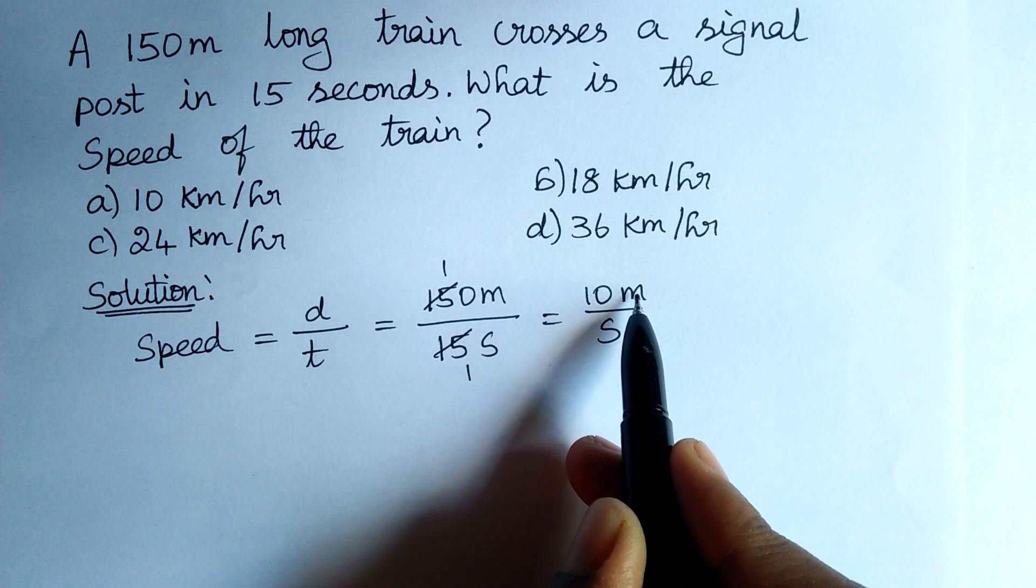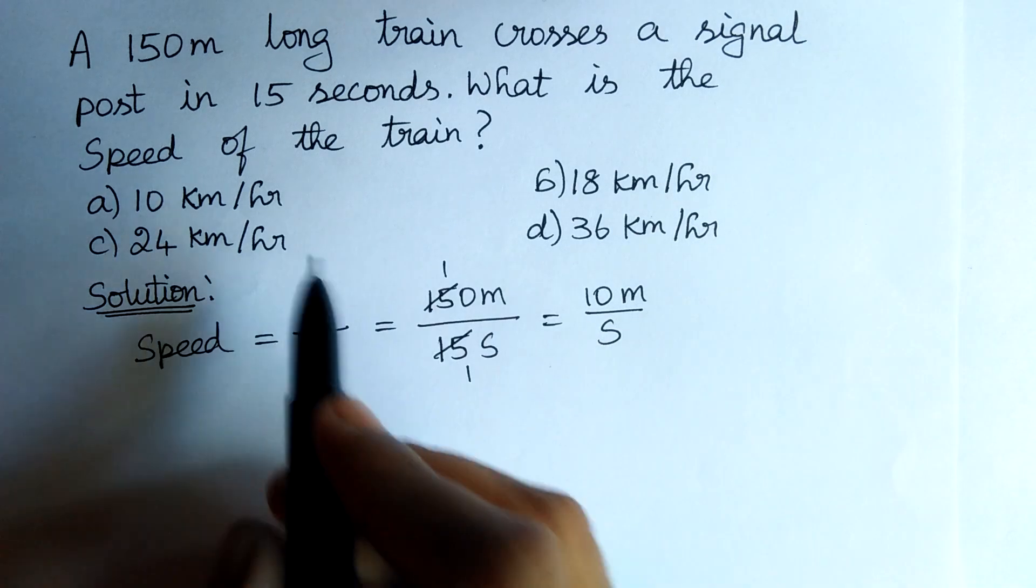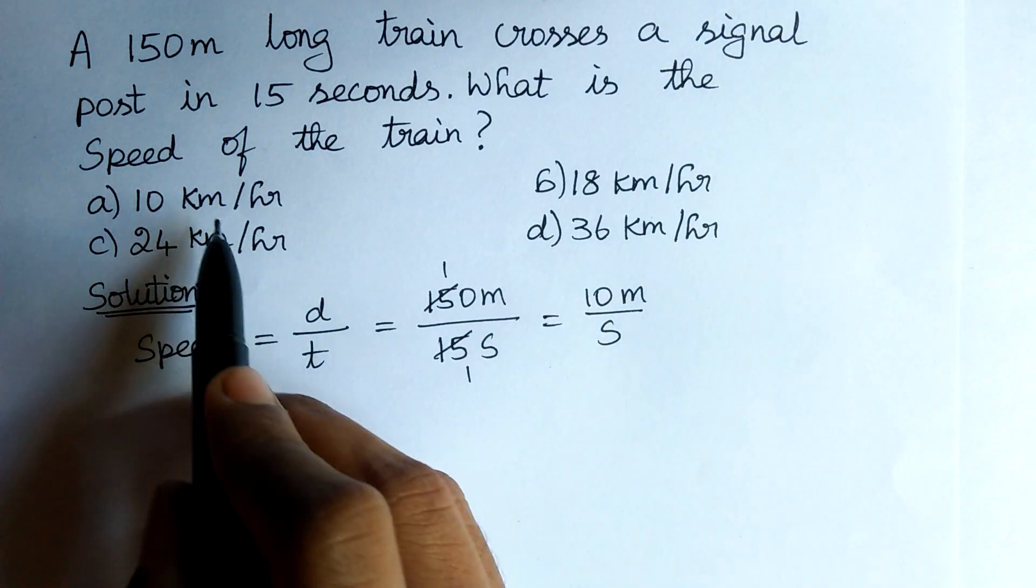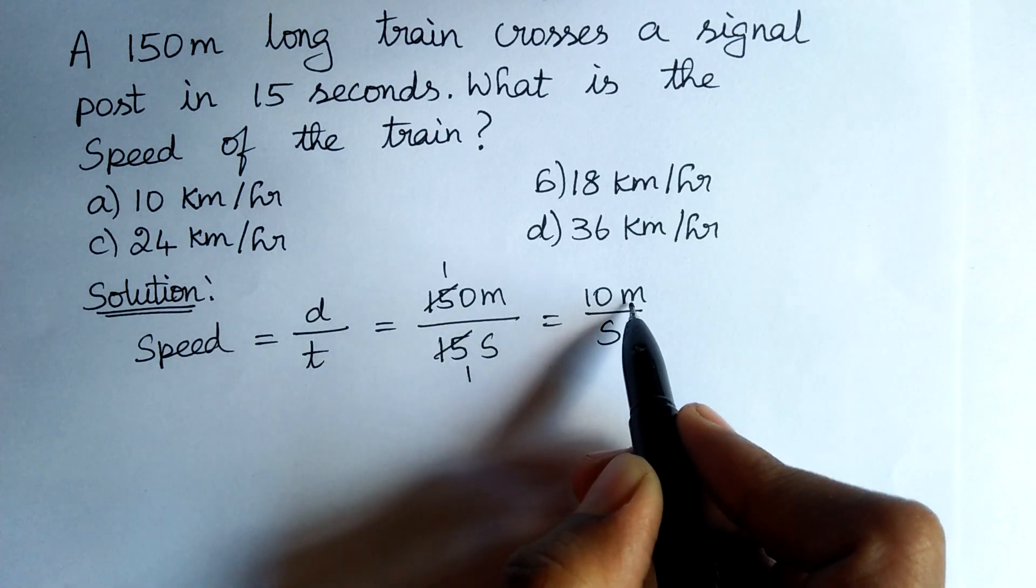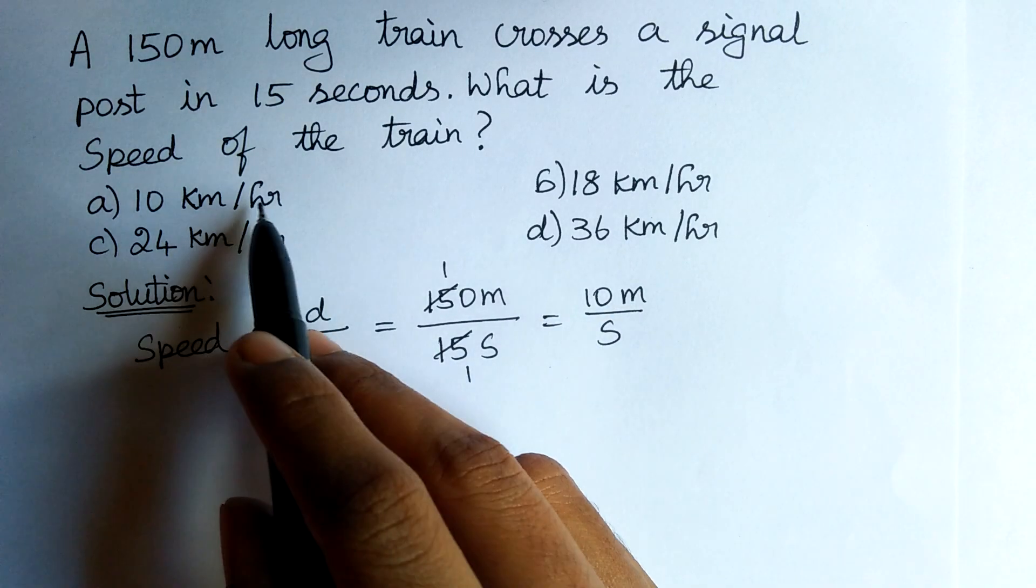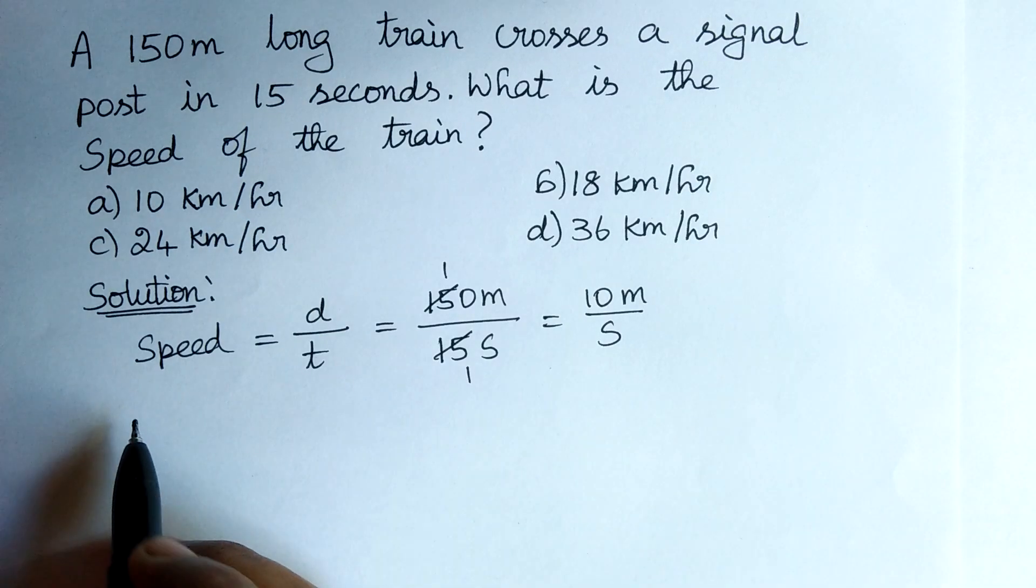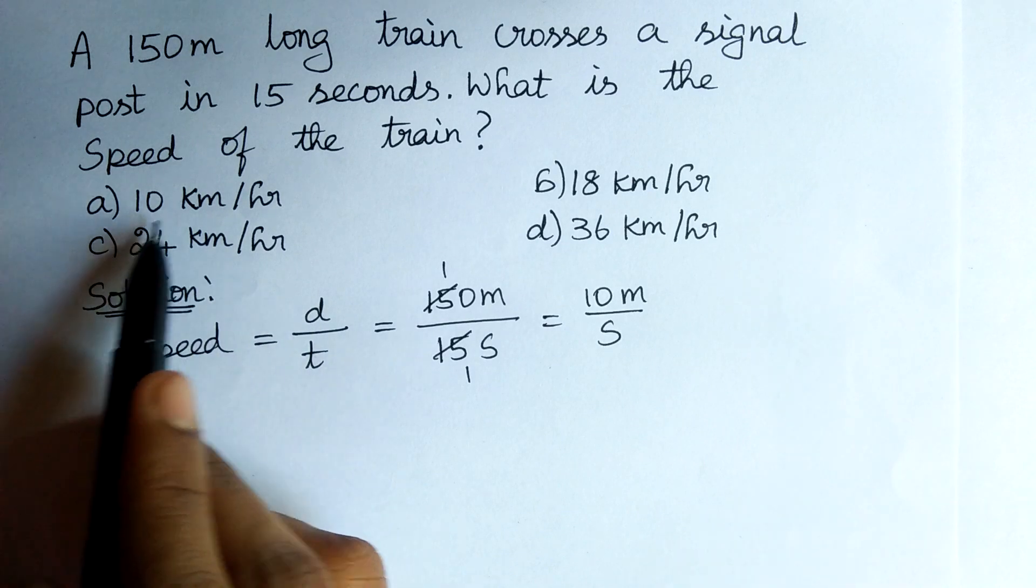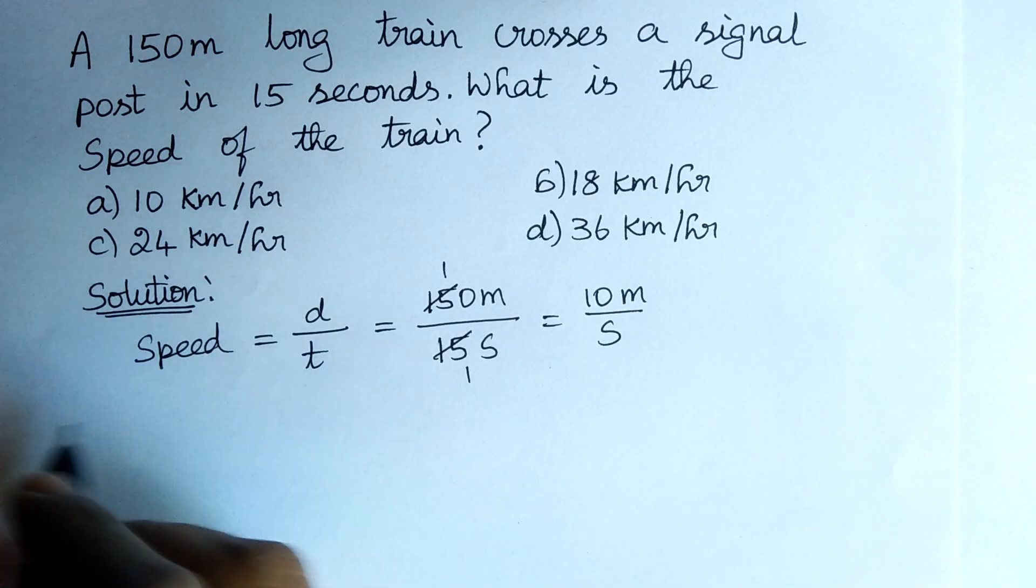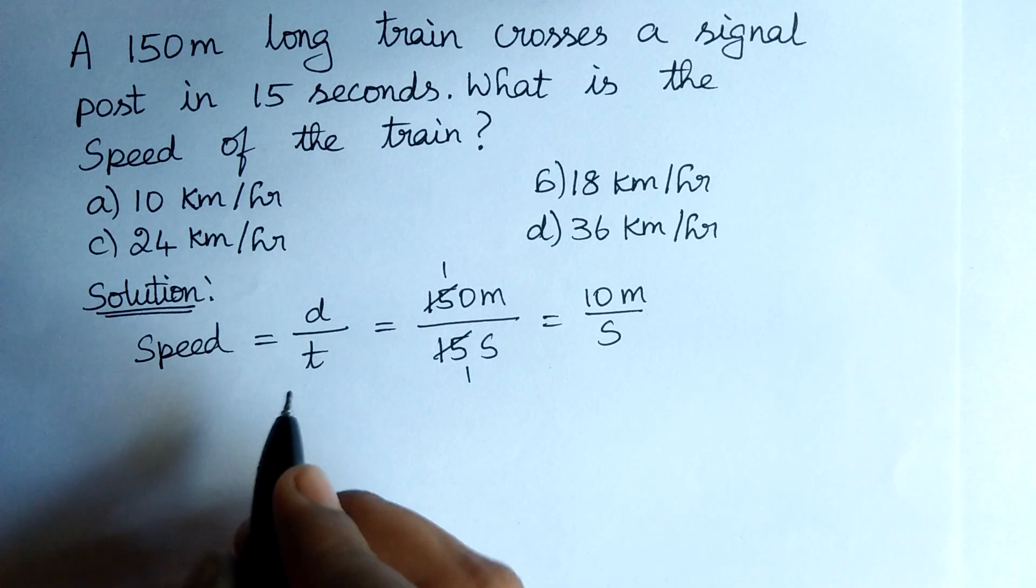Here, the parameters are in meters per second. But we need the answers in kilometer per hour. Therefore, we need to convert this meter per second to kilometer per hour. Here, 10 meters per second is not equal to 10 km per hour. You must see that carefully.